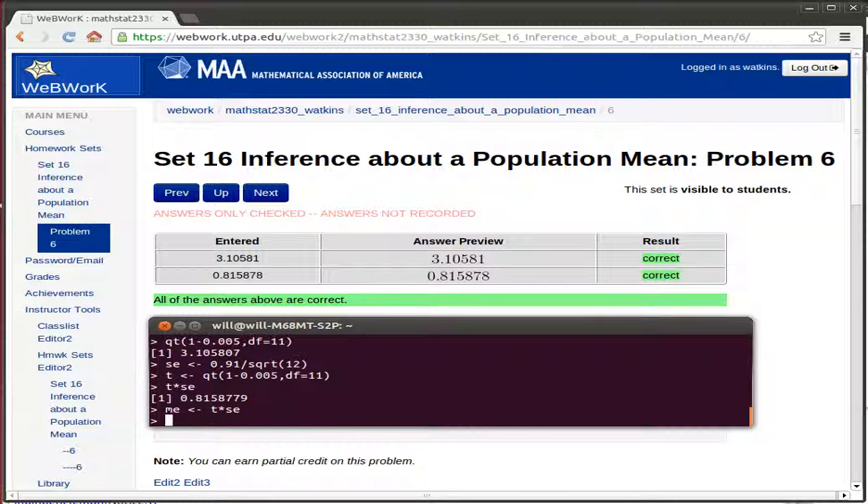And so we could find the confidence interval—they didn't ask us to do that here, but we could find the confidence interval in this problem because we knew that the mean was 3.85 and it would just be the mean minus the margin of error, that would be the lower bound. And it would be 3.85 plus that margin of error would be the upper bound. So in this problem they're just asking us for some of the parts that we need to put together to be able to find that confidence interval.